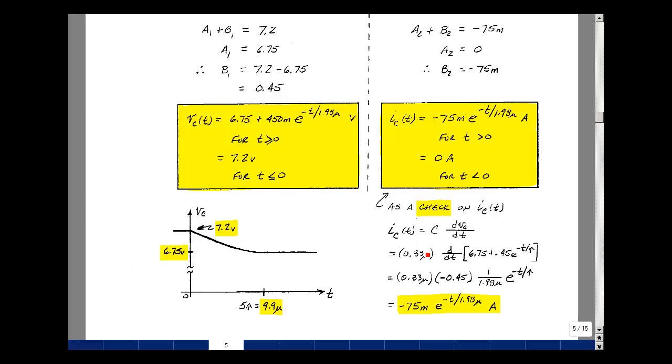So we're going to take the capacitance, which is 0.33 microfarads, and multiply it by the derivative of the capacitor voltage, which was 6.75 plus 0.5 e to the minus t over tau. Derivative of a constant is zero. Here's the 0.45.